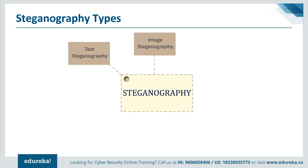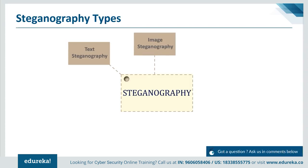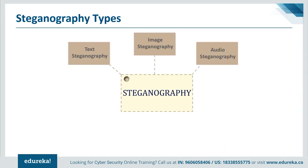Next is image steganography — hiding data in an image. It's one of the most popular ways because an image has a huge number of bits in its digital representation, making it easy to store or hide data. Common approaches include LSB steganography, masking and filtering, and encryption techniques. Then there is audio steganography, where a secret message is embedded into an audio signal, altering the binary sequence of the corresponding audio file. Video steganography lets you hide any kind of data in digital video format, with the advantage that large amounts of data can be hidden easily — you can think of it as a combination of image and audio steganography.